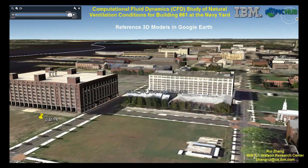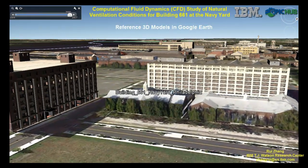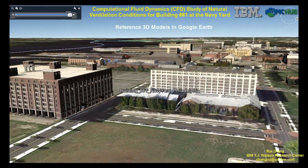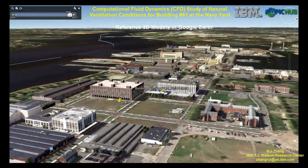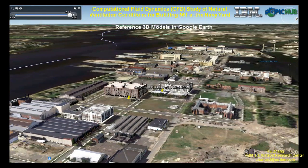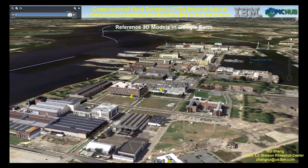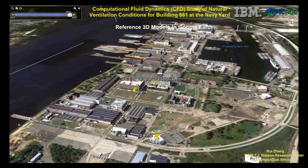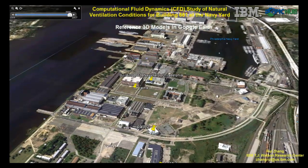What is being shown here is the Navy Yard in Google Earth. The lower building with skylights on top is Building 661, and there are three immediate buildings adjacent to it. 3D surface models of the buildings on the Navy Yard are available in Google SketchUp format, including Building 661 and its neighboring buildings, which will be important reference models for conducting CFD simulations.